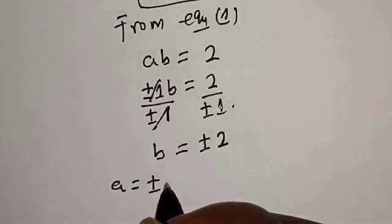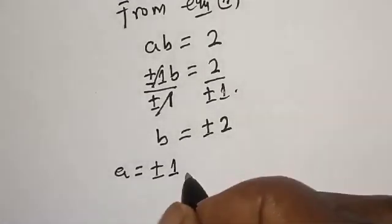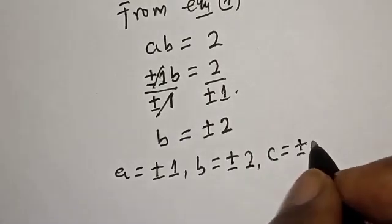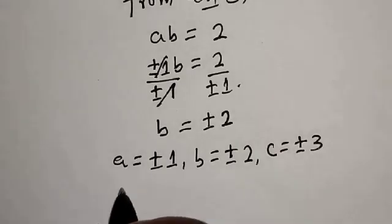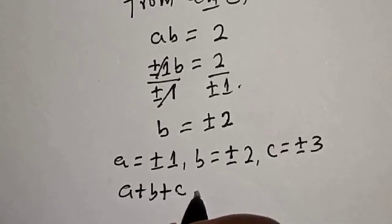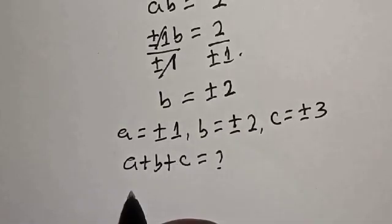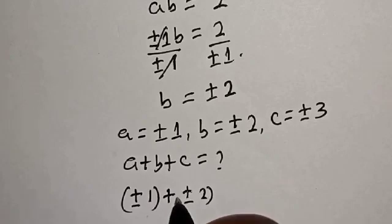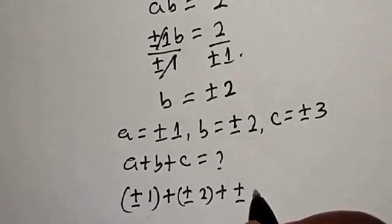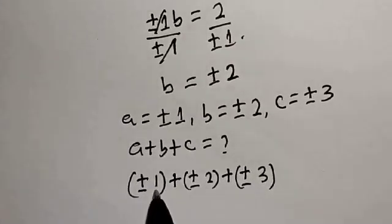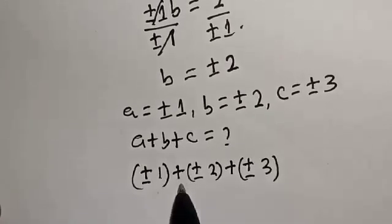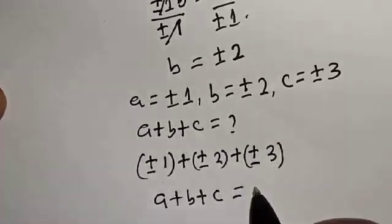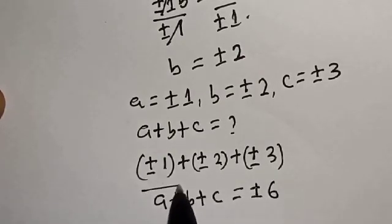Therefore, a is equal to plus or minus 1, b is equal to plus or minus 2, and c is equal to plus or minus 3. The question asks for a plus b plus c: that is plus or minus 1 plus plus or minus 2 plus plus or minus 3. Adding everything together, 1 plus 2 plus 3 equals 6. Therefore, a plus b plus c is equal to plus or minus 6. That is our final answer.